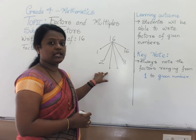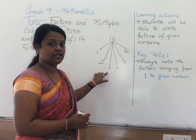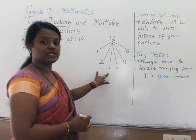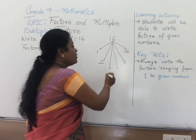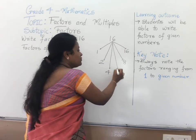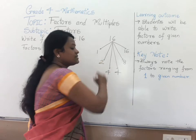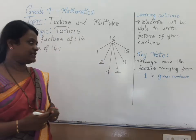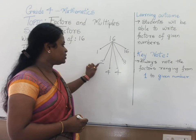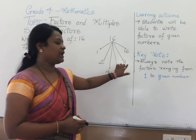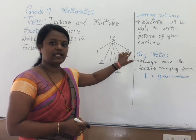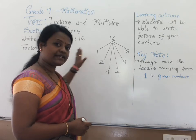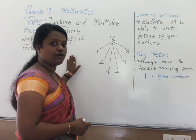Can we divide 16 by 3? No. Let us go ahead with the digit 4. 4 4s are 16. So here we state 1, 2, 4, 8, 16 are the divisors — that is, they are factors of 16.